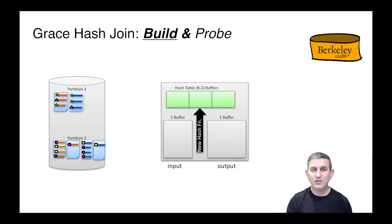For now, let's focus on a single machine. We're going to do the second part of the Grace Hash Join, which is the build and probe phase. We're going to build on relation R. We read a page of relation R from partition one into memory and construct a hash table out of it.